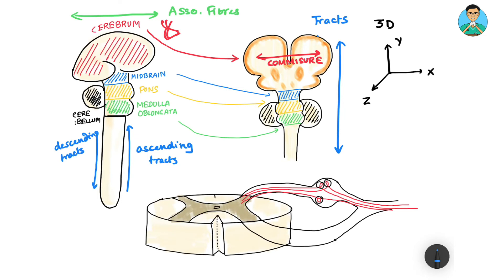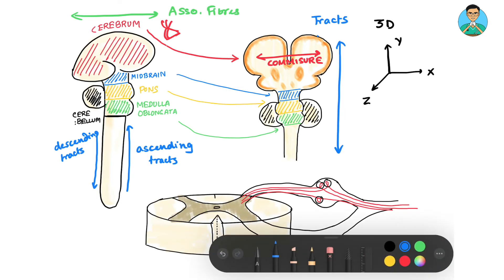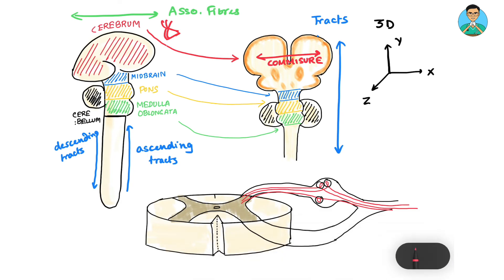One very important commissural fiber that we have is our corpus callosum which connects the two hemispheres of the cerebrum. So that is known as the corpus callosum.